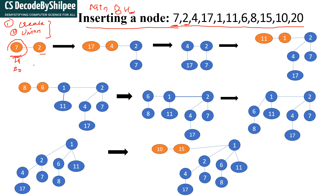So 7 is inserted with degree 0. Now 2 comes, so I have created another binomial heap H1 with degree 0. Since these 2 binomial trees have the same degree, we perform a union operation. Because I am following the min binomial heap property, the minimum value becomes the root. So 2 is the root and 7 becomes the leftmost child of 2.